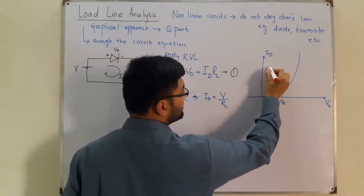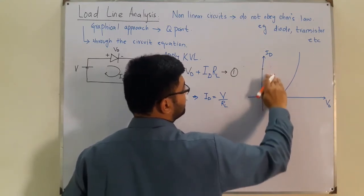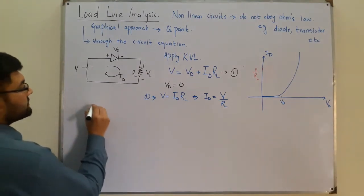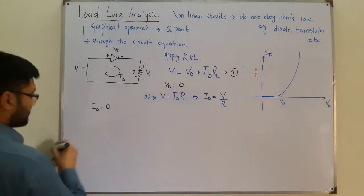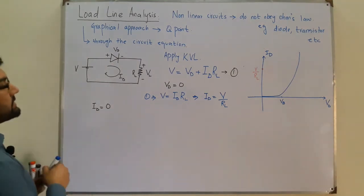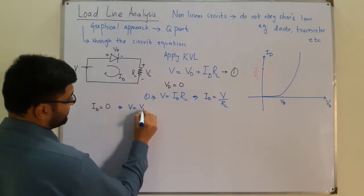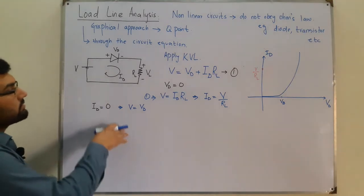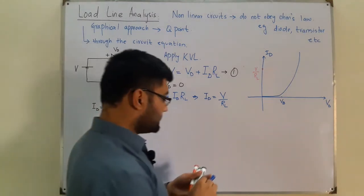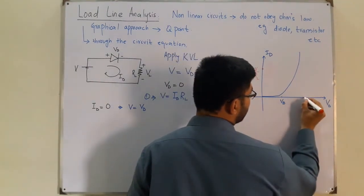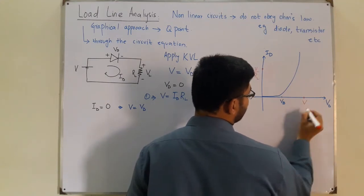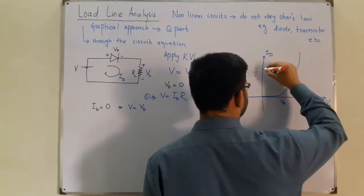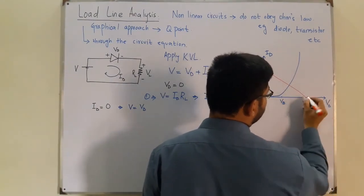Next, put ID = 0. Then V = VD, meaning when no current flows, all the applied voltage appears across the diode. This gives the x-intercept at VD = V. By joining these two intercept points, we get a straight line — the load line.